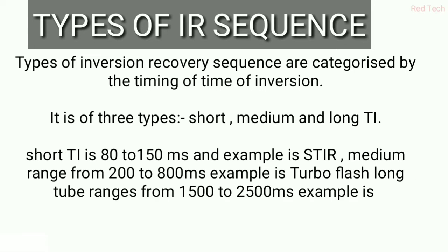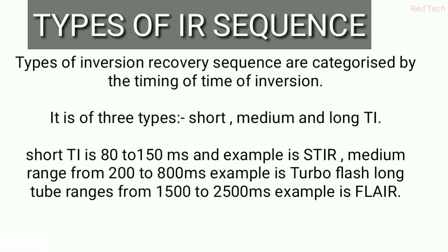The three categories are short, medium, and long time of inversion. Short time of inversion ranges from 80 to 150 milliseconds, and the example sequence is STIR. Medium range is about 200 to 800 milliseconds, which includes Turbo Flash and MPRAGE sequences. Long time of inversion ranges from 1500 to 2500 milliseconds, with FLAIR as the example, which is used in neuroimaging.